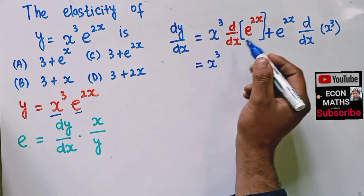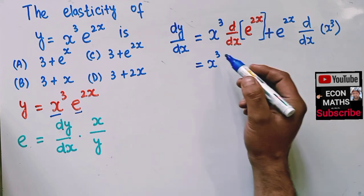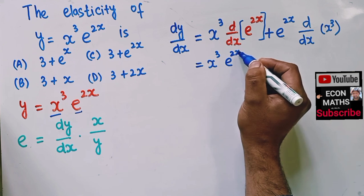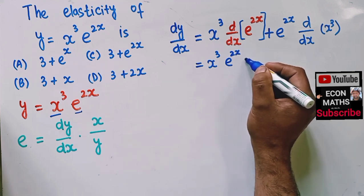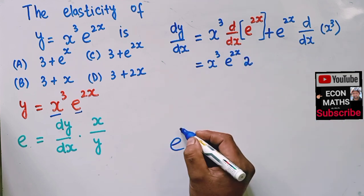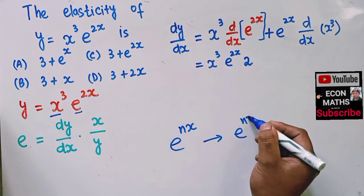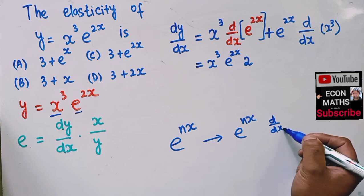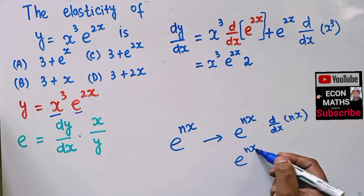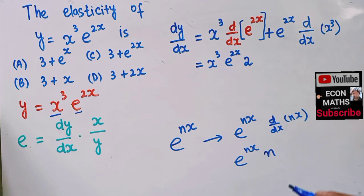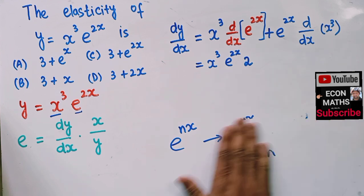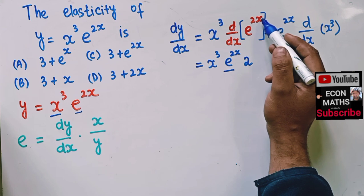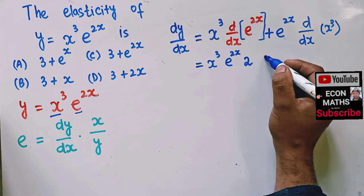So here we have x³ times the derivative of e^(2x). The derivative of e^(2x) is e^(2x) times the derivative of 2x, which is 2. In general, if we have e^(nx), its derivative is e^(nx) times n, by the chain rule. So the derivative of e^(2x) is 2·e^(2x). Then we add e^(2x) times the derivative of x³.